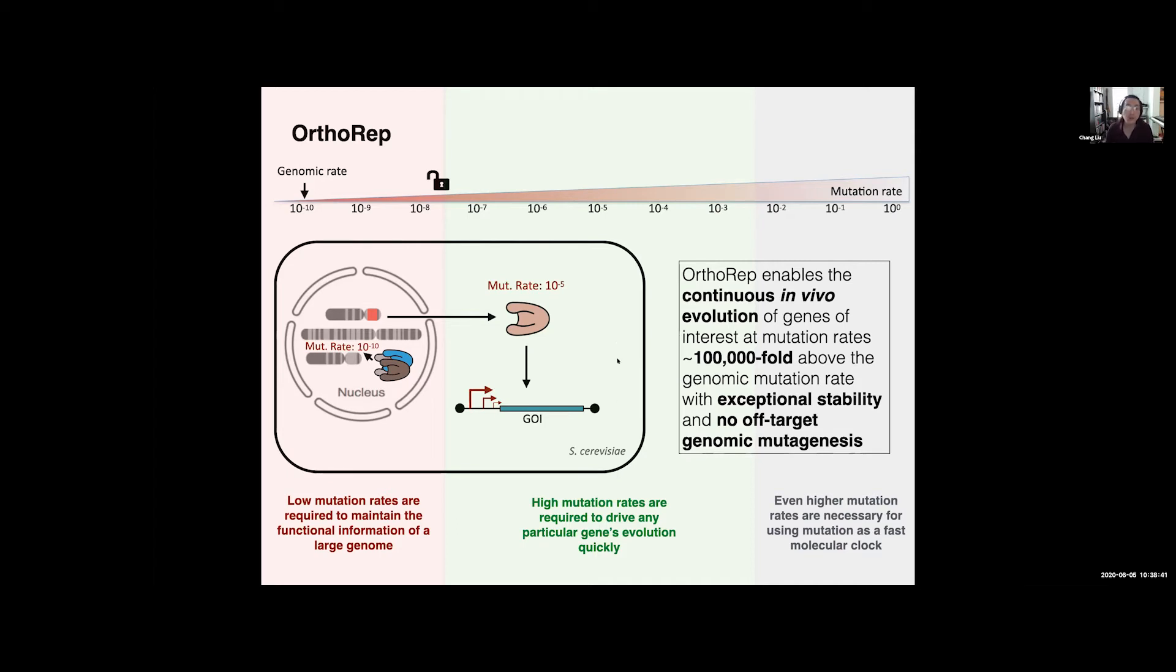And so with OrthoREP, I think we're basically fundamentally getting into this new territory of mutation rates that we can drive the evolution of individual genes at in vivo. And so in summary, OrthoREP allows what we call continuous in vivo evolution. Now we have our mutation rates at about 100,000-fold above the genomic rate, and in the lab there's new systems that can get even higher. And we have no off-target genomic mutagenesis, so the cell is perfectly happy.